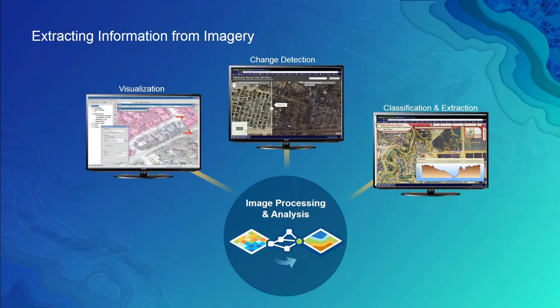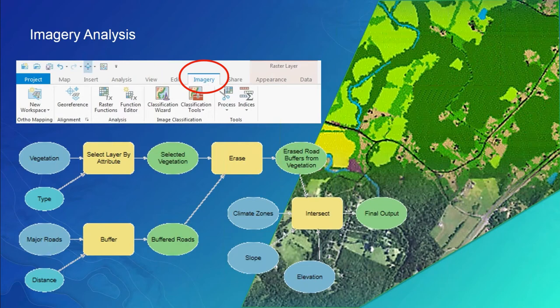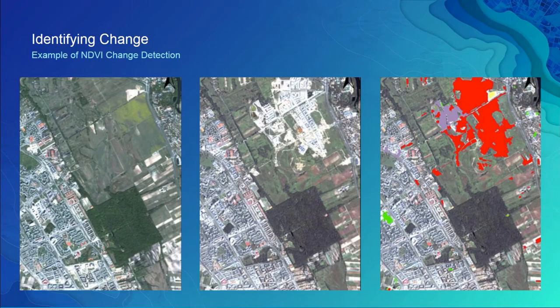ArcGIS provides the ability to do image processing and analysis for visualization, change detection, image classification, and feature extraction. ArcGIS also has imagery analyst tools and the ability to sequence these tools in tasks and models to create automated workflows. In this example, we see change detection using NDVI, or Normalized Difference Vegetation Index, to determine areas of change from vegetation seen in the image on the left, to a built environment in the center, to the areas of change detected indicated in red on the image on the right.